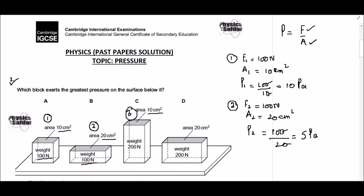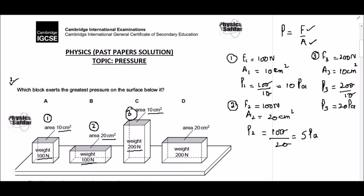Now move on to block 3: the area is 10 centimeters squared and weight is 200 Newtons. For block 3, F3 equals 200 Newtons and A3 equals 10 centimeters squared. Pressure P3 equals 200 over 10, and after simplification we get 20 Pascal.